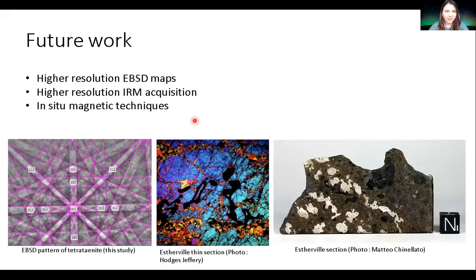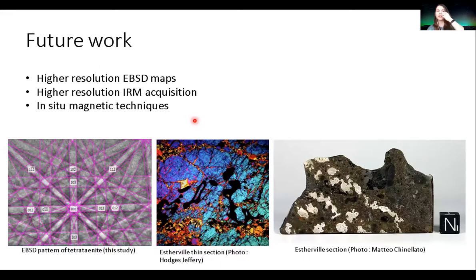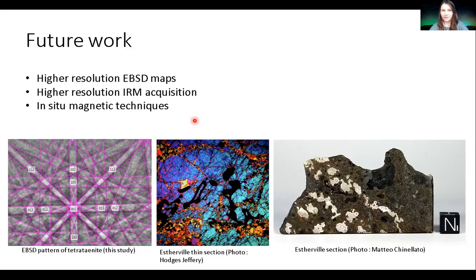In the longer term, I would like to get higher-resolution EBSD maps of the metal grains and look at the microstructure in more detail. I am curious about applying in-situ magnetic techniques to those nanometric inclusions — but at the same time, I'm aware that mesosiderites are just not very good for magnetic studies, it turns out. So maybe this is a little bit of a dead end, but I'm very interested in hearing opinions.